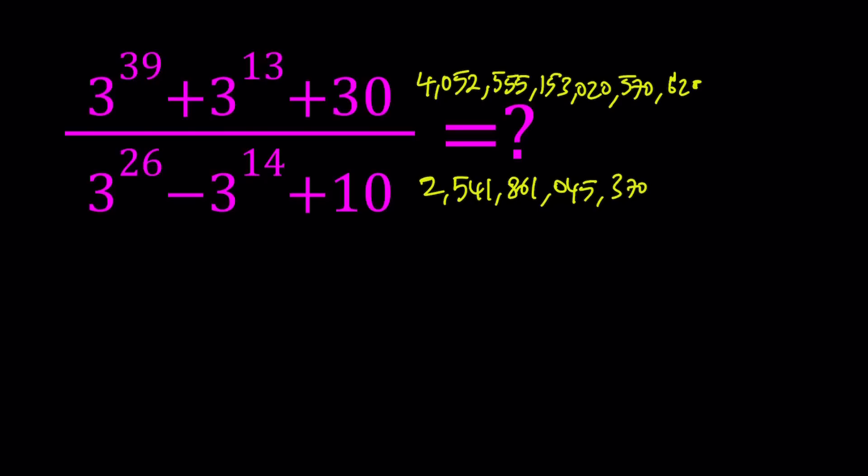Okay, so how do you read these numbers? Let's start with the top one, the larger number. The larger number, and I think the ones should just be a zero. So the top number is 4 quintillion, 52 quadrillion, 555 trillion, 153 billion, 20 million, 570,620. And the bottom number is much smaller, 2 trillion, 541 billion, 861,045,372.